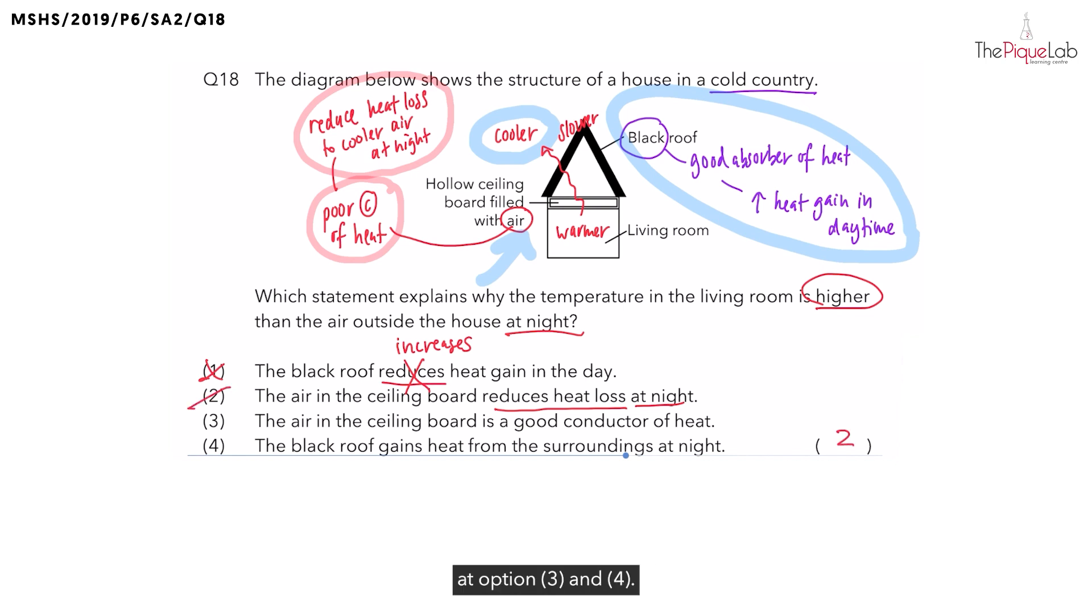But let's just take a look at option 3 and 4. Is the air a good conductor of heat? We know that air is a poor conductor of heat. So statement 3 is out. And does the black roof gain heat from the surroundings at night? We know the black roof gains heat from the surrounding in the day. In fact, the black roof should be losing heat to the cooler air at night. So statement 4 is also out. And this confirms our answer as option 2.